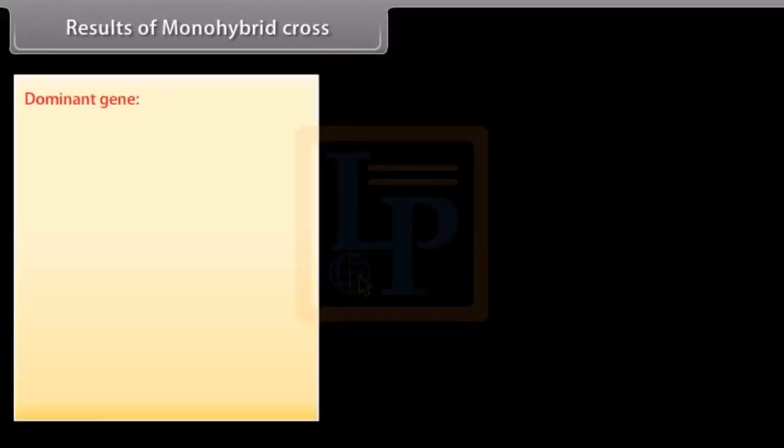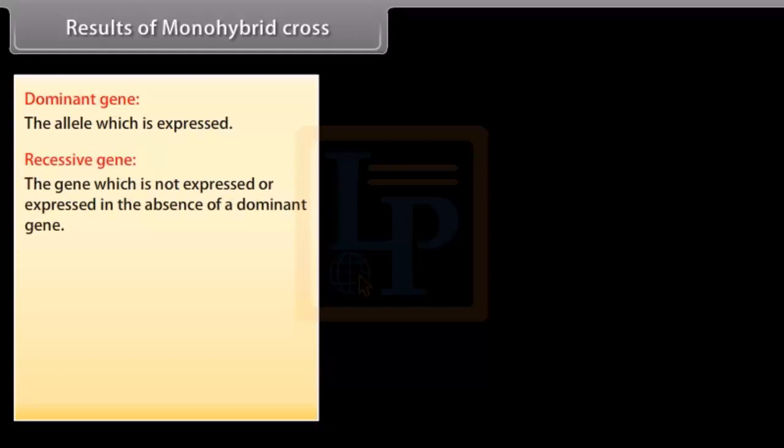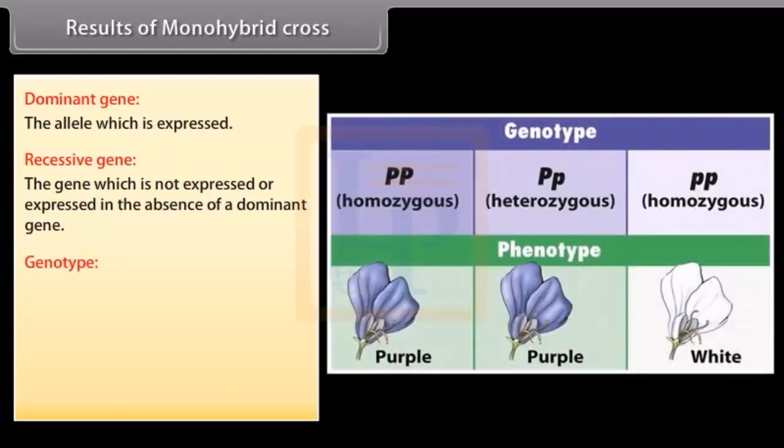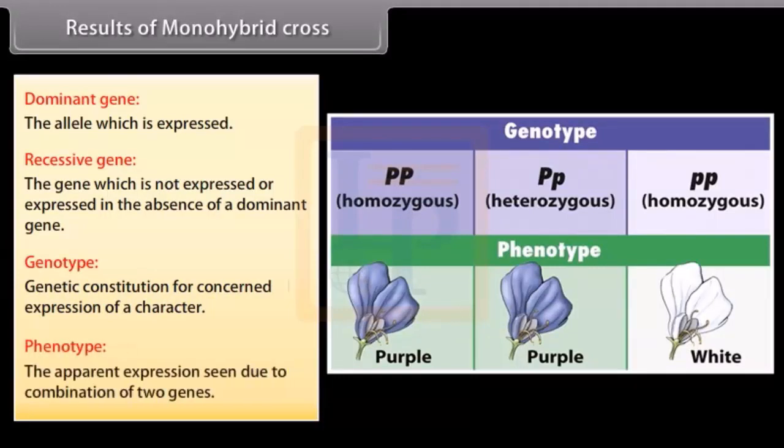Dominant gene: the allele which is expressed. Recessive gene: the gene which is not expressed or expressed in the absence of dominant gene. Genotype: genetic constitution for concerned expression of a character. Phenotype: the apparent expression seen due to combination of two genes.